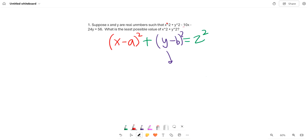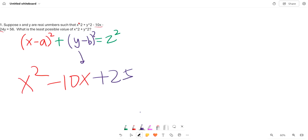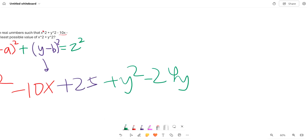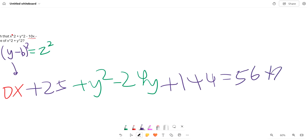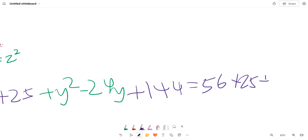So obviously we can see that 10x and 24y. So we can have x² - 10x + 25, which we're going to add to the other side. And then we have plus y² - 24y + 144 equals 56 + 25 + 144.